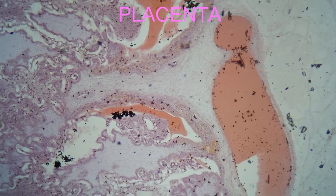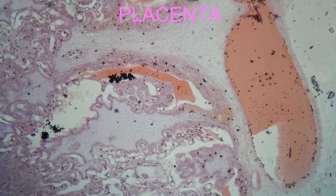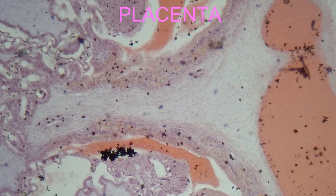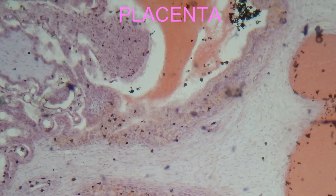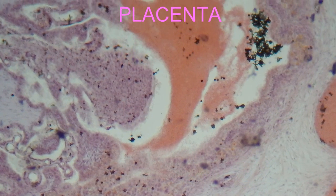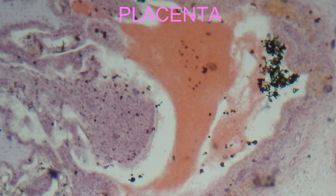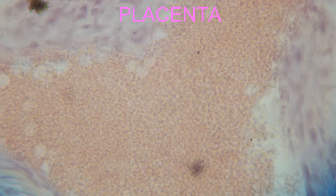Thus, the chorion forms the fetal part of the placenta. And the placenta is an organ which is produced by two separate individuals. The endometrial tissue of the mother and the chorionic tissue of the fetus together form the placenta.